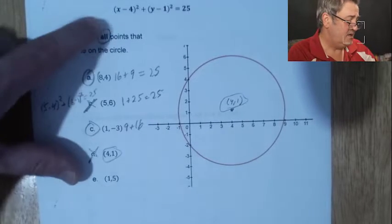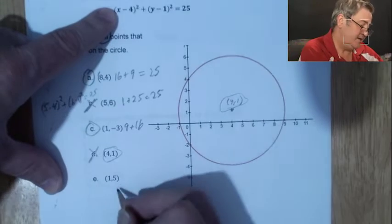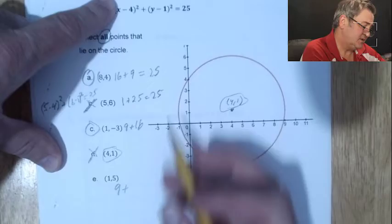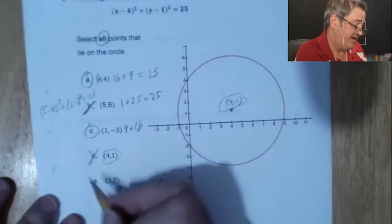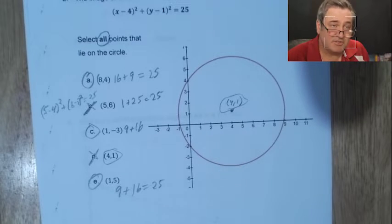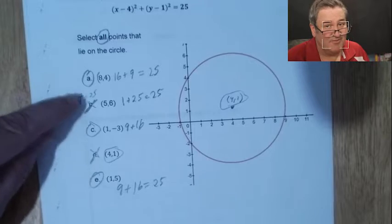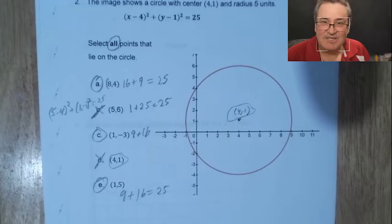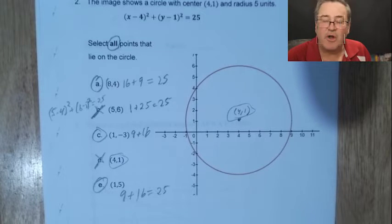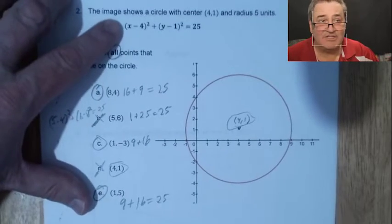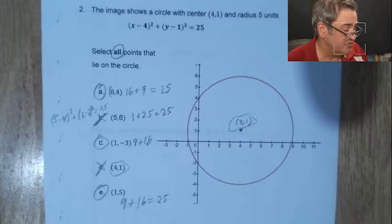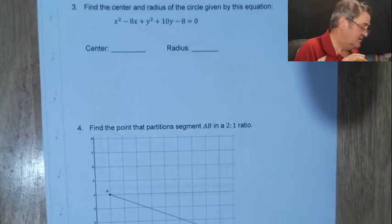For the last point: (1 − 4)² + (5 − 1)² = (−3)² + 4² = 9 + 16 = 25. That also equals 25, so it's on the circle. Three of our five points were on the circle, with one being the center and one being just outside (equaling 26). This is purely algebraic — you substitute the x and y coordinates into the circle equation and see if it's true.